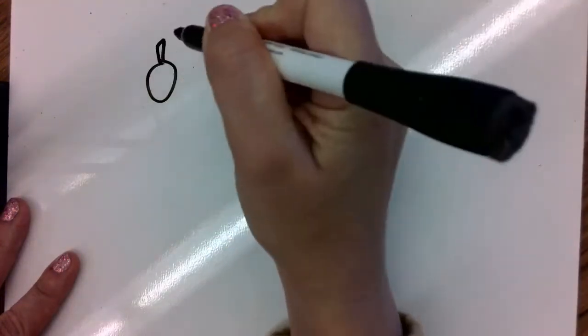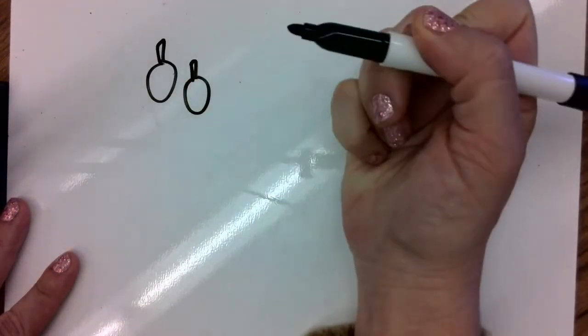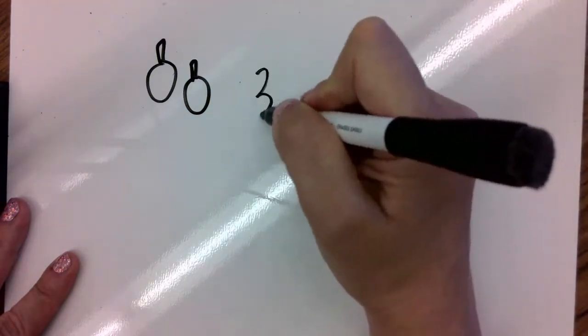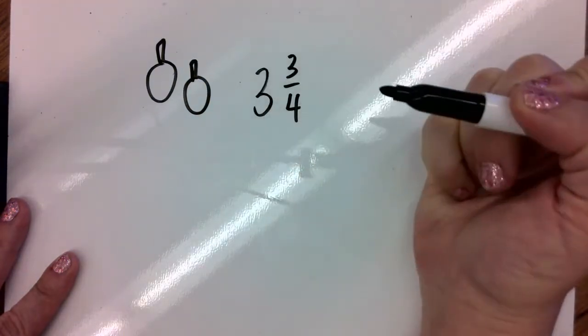All right, I know that Kevin and Megan have pumpkins. Altogether their pumpkins are three and three-fourths.